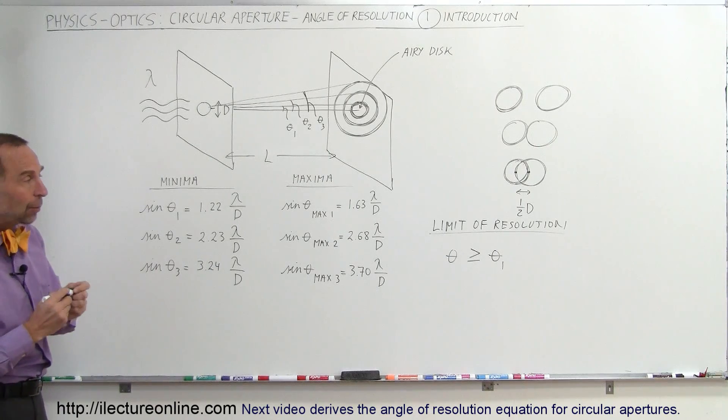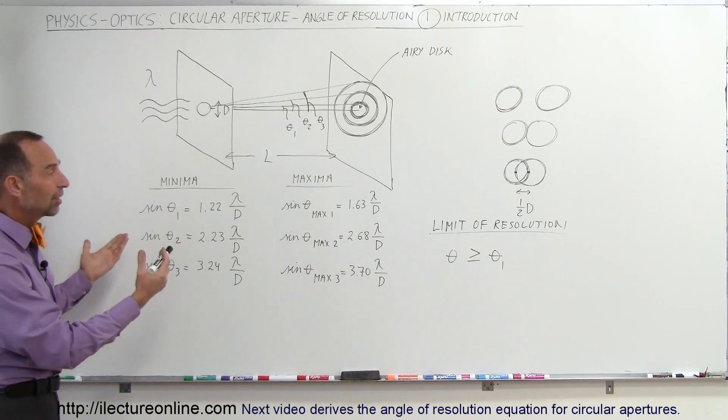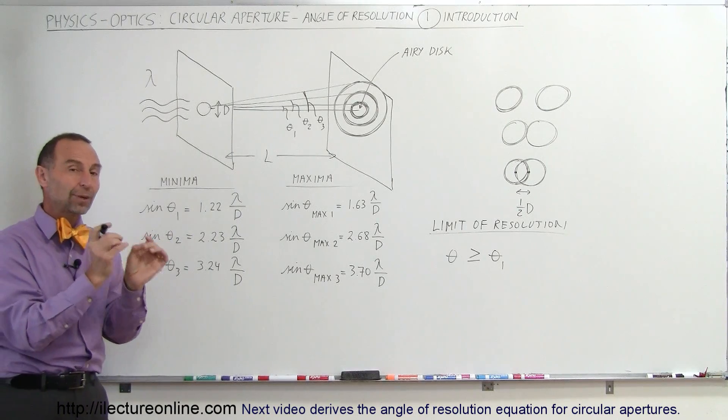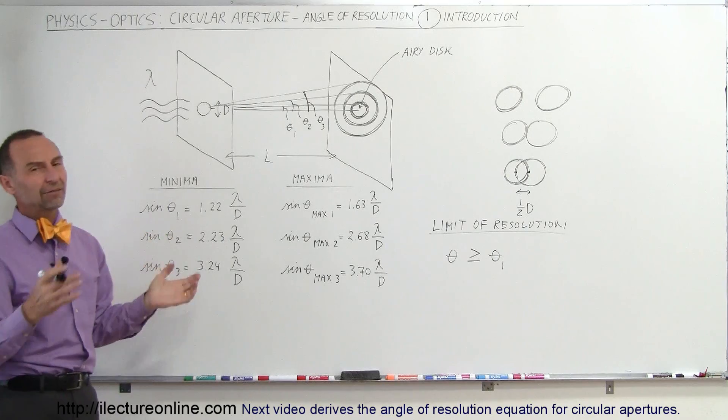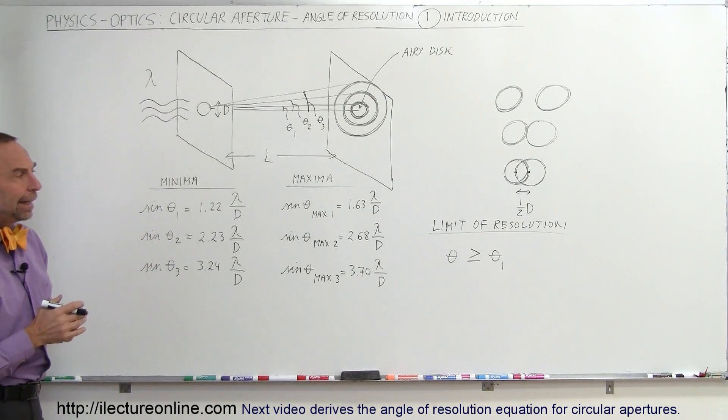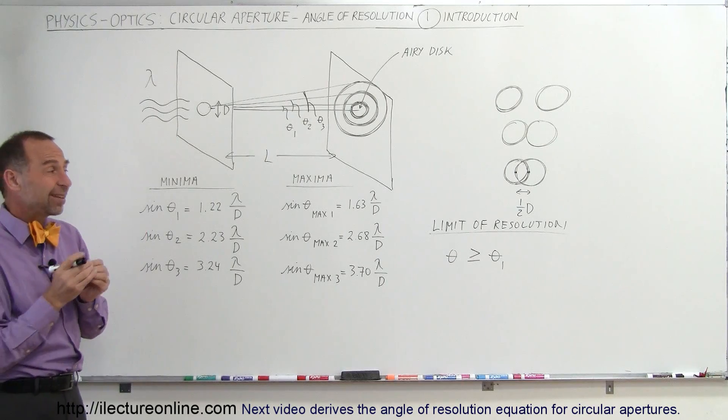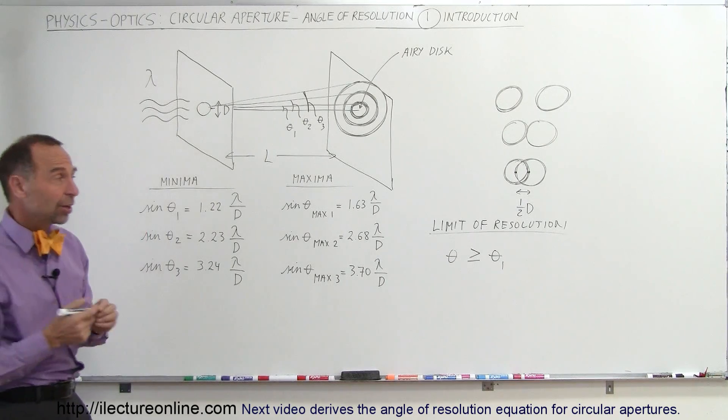So now we're going to go ahead and start utilizing these equations to show you how to actually calculate the angle of resolution to see what kind of objects we can actually see and resolve, and what kind of objects we can no longer resolve. It's not just the difference or the separation angle between two objects, it could simply be the size of a small object. For example,